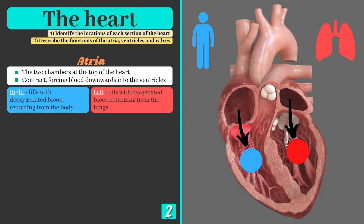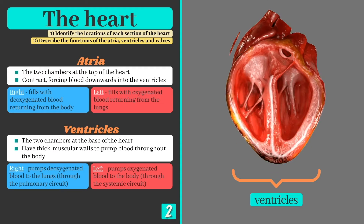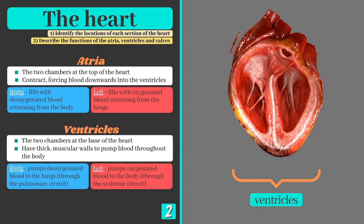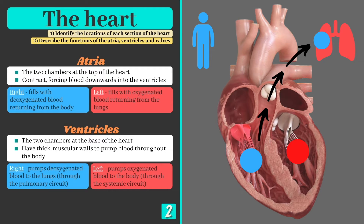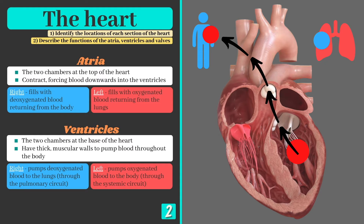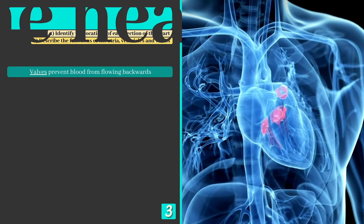The right atrium fills with deoxygenated blood returning from the body while the left atrium receives blood from the lungs. As the atria contract, blood is forced directly downwards and into the ventricles. The ventricles have thick muscular walls as they need to pump blood over much greater distances. The right ventricle directs deoxygenated blood through the pulmonary circuit to the lungs, while the left side delivers oxygenated blood throughout the body.